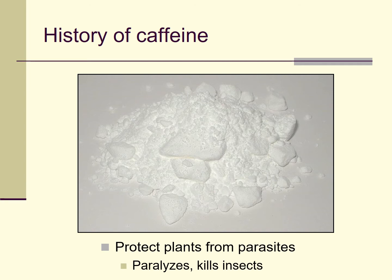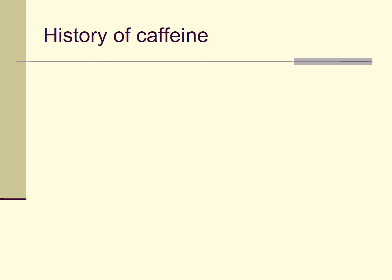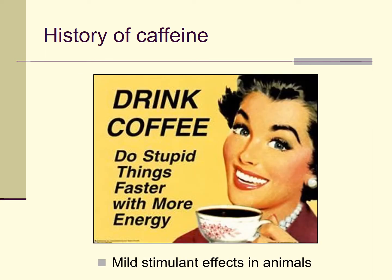That poisonous effect for tiny insects is, for larger animals like humans, kind of a mild stimulant effect. So what works for plants in one way works for us in a somewhat different way. That's a little bit of a preview — caffeine has mild stimulant effects in humans. For the purpose of the history, I want to focus on really two sources of caffeine: tea and coffee. We could talk about chocolate or yerba mate, but this is already a fairly long lecture.